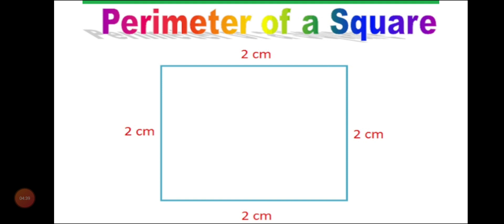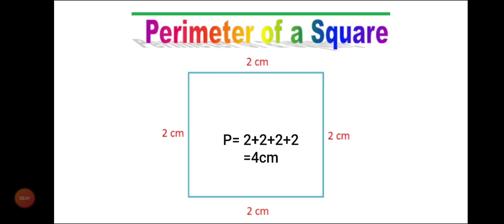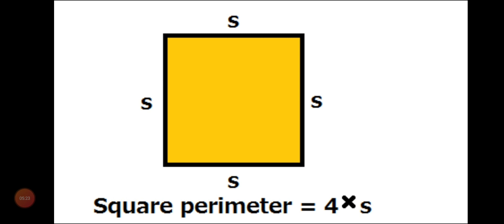Now let us check the perimeter of a square. A square is a figure whose all four sides are equal. As you can see in the picture, all four sides are equal to 2 centimeters each. To find the perimeter of this square, I add all four sides: 2 cm plus 2 cm plus 2 cm plus 2 cm equals 8 centimeters. From here we can conclude that the perimeter of a square equals 4 times the side, that is S plus S plus S plus S equals 4S. Note down this formula for the perimeter of a square.